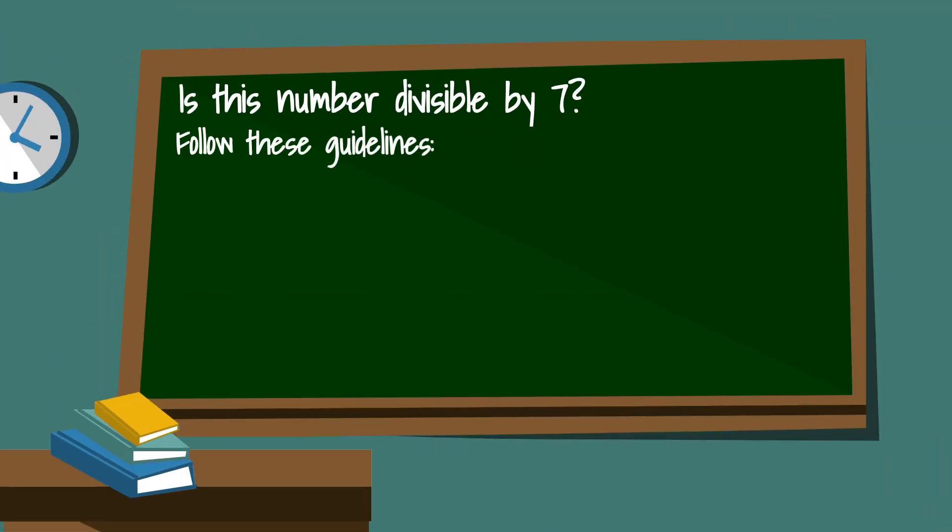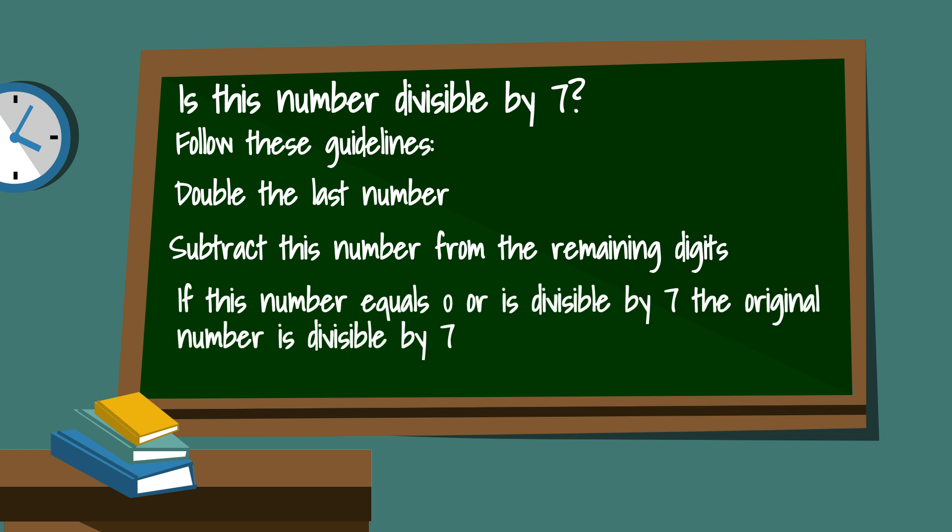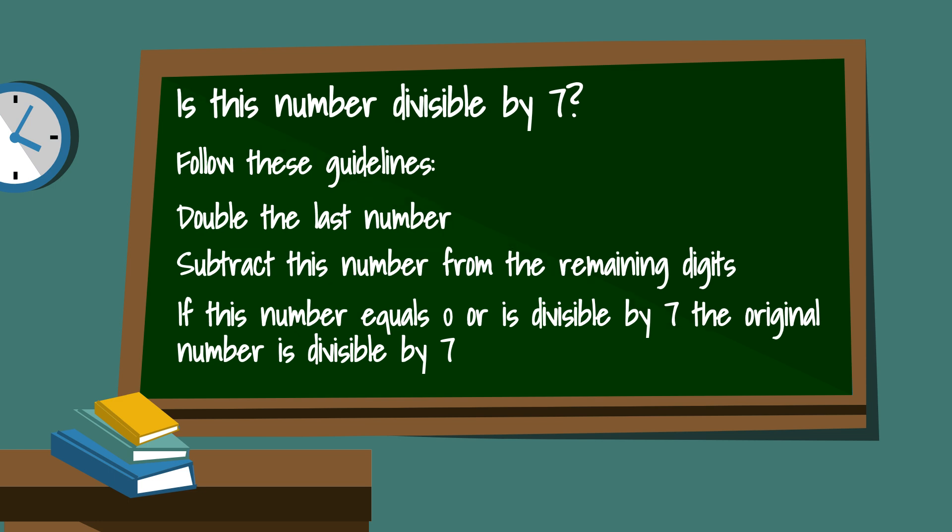First you take the last digit of the number you are testing and double it. Next you subtract this number from the rest of the digits. If this new number is either 0 or is divisible by 7 then you know the original number is also divisible by 7.